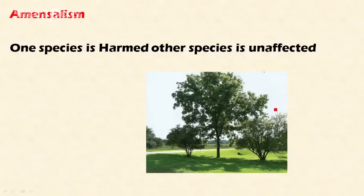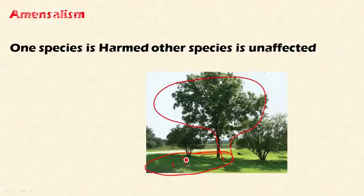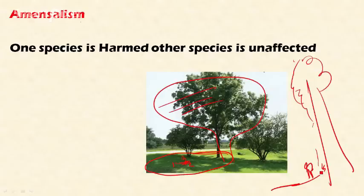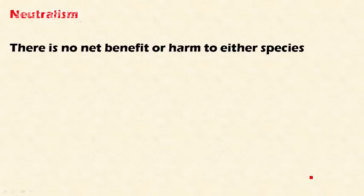In amensalism, one species is harmed and the other is unaffected. For example, a large tree is unaffected, but its shade prevents other plants from growing since plants need sunlight. Similarly, eucalyptus trees have an allelopathic effect — they produce toxic chemicals that inhibit the growth of nearby plants. Fallen eucalyptus leaves are also toxic to surrounding plants, stunting their growth, while the eucalyptus itself remains unaffected.